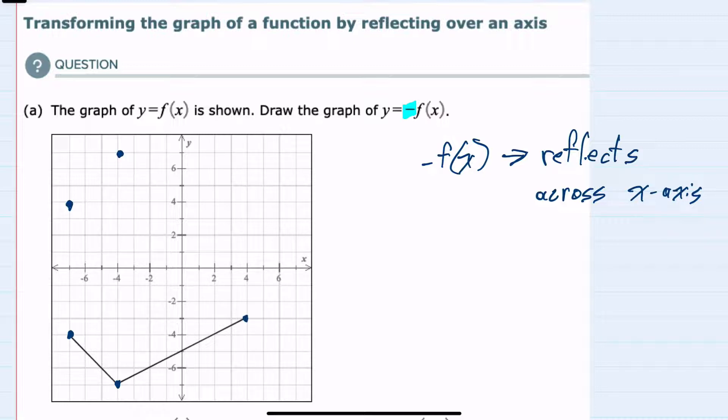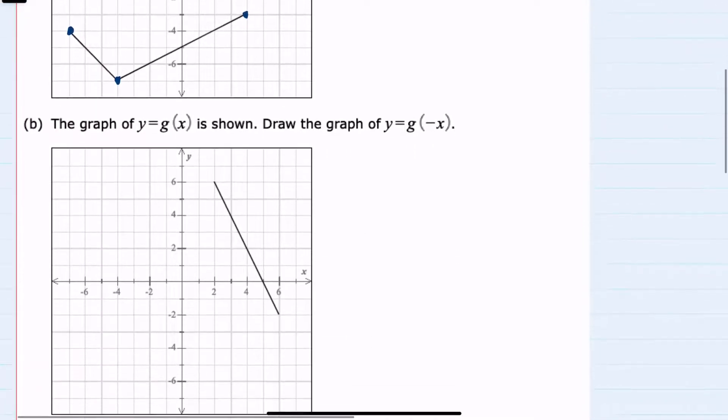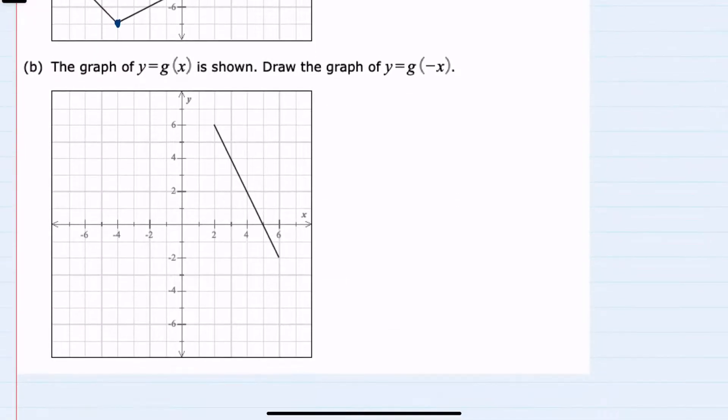And for this point, when x is 4, instead of having a negative 3, we will have a positive 3. So we have the opposite for each one of these y values, and that would be the same for all of the points on the graph. So this is a reflection across the x axis.